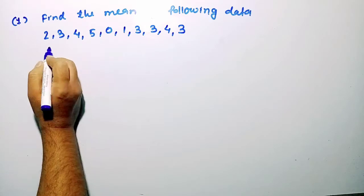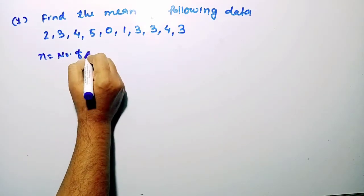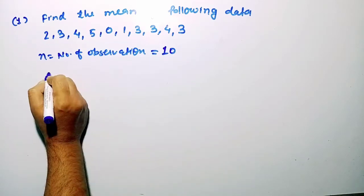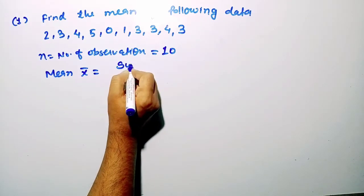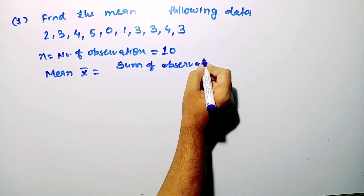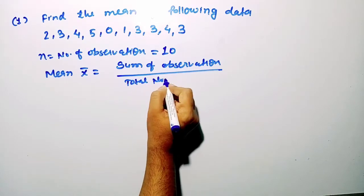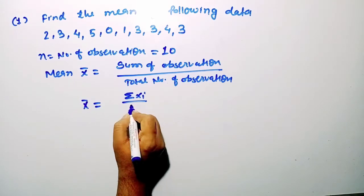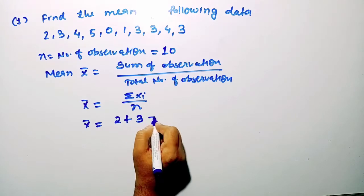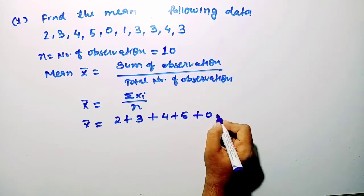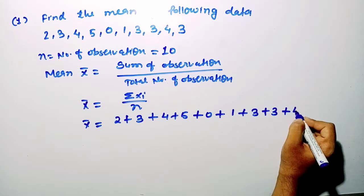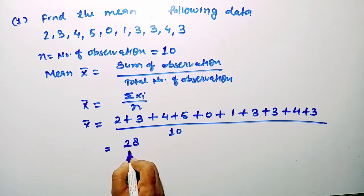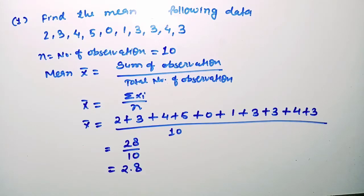For the next example, the number of total observations is 10. Using the formula x̄ = Σxi / n, we add: 2 + 3 + 4 + 5 + 0 + 1 + 3 + 3 + 4 + 3 = 28, divided by 10, giving a mean of 2.8.